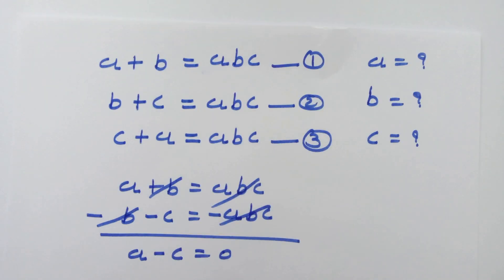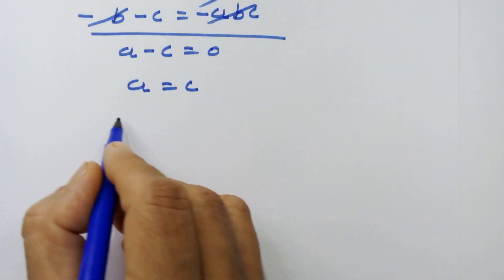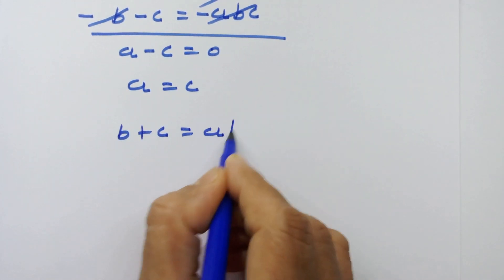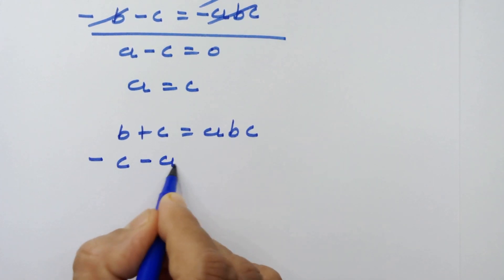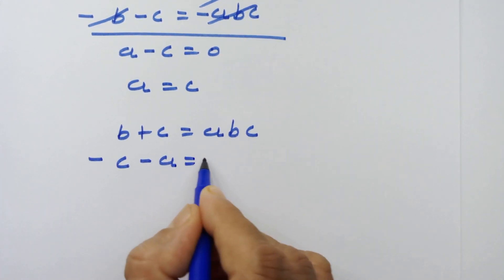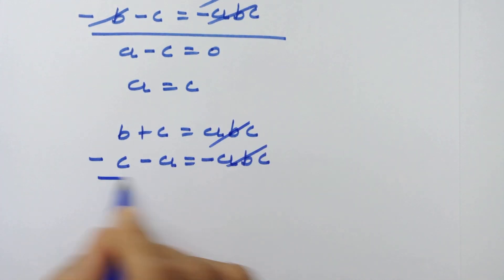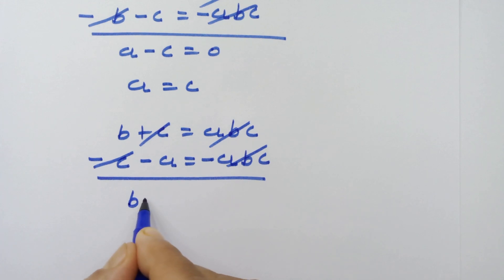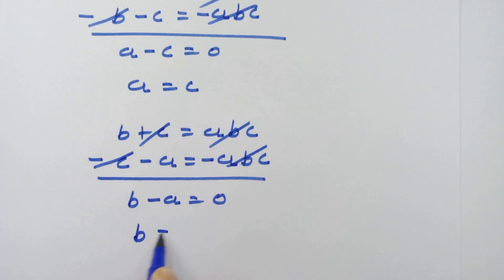Now let's subtract equation number 3 from equation number 2. So, B plus C equals A times B times C, minus C minus A equals minus A times B times C. These two will be cancelled and these two will also be cancelled. So we have B minus A equals 0, meaning B is equal to A.